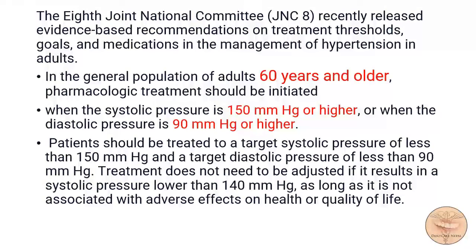The first recommendation from JNC 8: in the general population of adults 60 years or older, pharmacologic treatment should be initiated when the systolic blood pressure is 150 mmHg or higher, or when the diastolic pressure is 90 mmHg or higher. The target systolic blood pressure should be less than 150 mmHg, and the target diastolic blood pressure should be less than 90 mmHg.